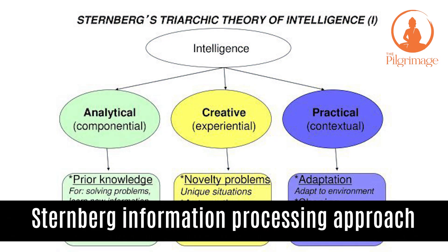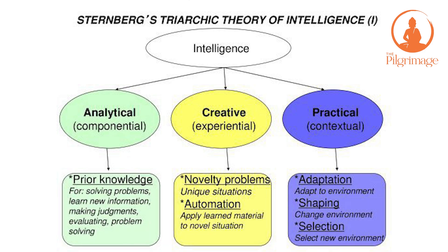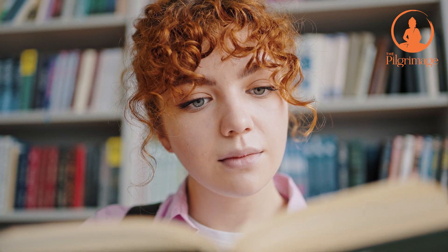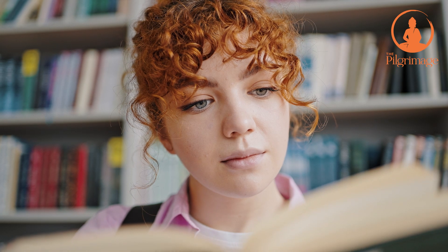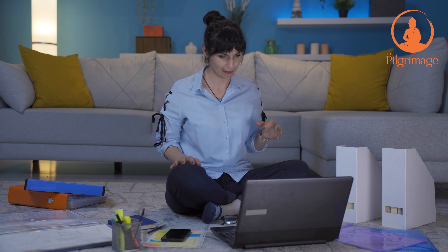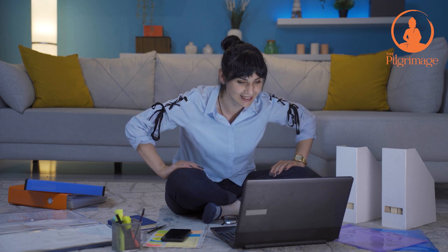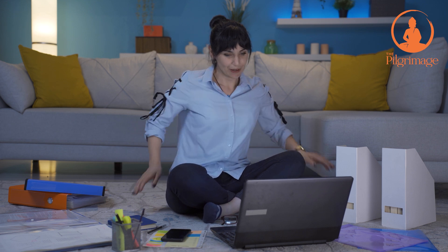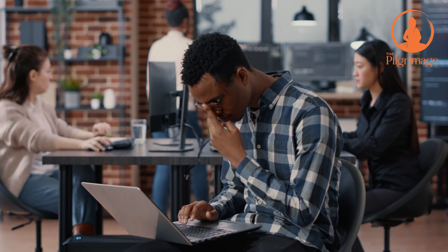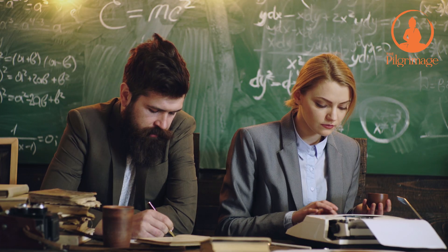Let's discuss Sternberg's Information Processing Approach. Sternberg's theory suggests that development is skills-based and continuous rather than staged and discontinuous, as stage theorists believe, and his focus is on intelligence. This focus on intelligence rejects the idea of incremental stages, but rather suggests that development occurs in the same way throughout life, differentiated only by the expertise of the learner to process new information.